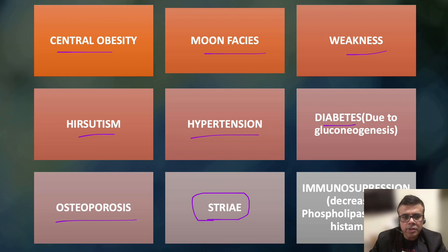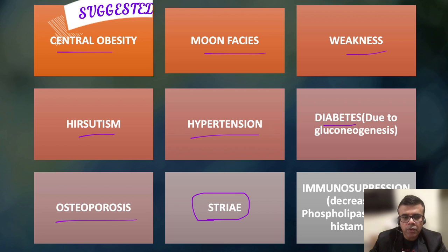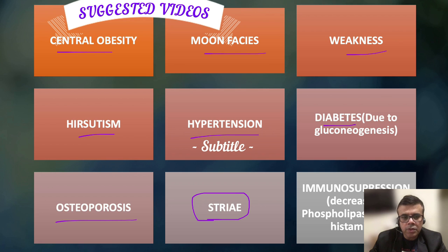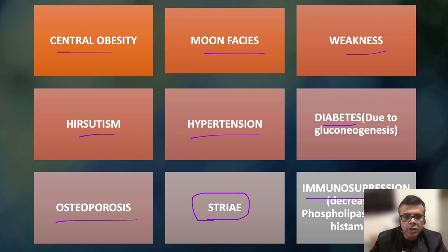Striae or abnormal pigmentation emerge because the corticotrophs of the pituitary, along with ACTH, also release melanocorticotropin hormones, causing pigmentation in abnormal areas of the body. Immunosuppression is also associated with hypercortisolism, due to decreased phospholipase activity and various other mechanisms related to cortisol's metabolic effects.